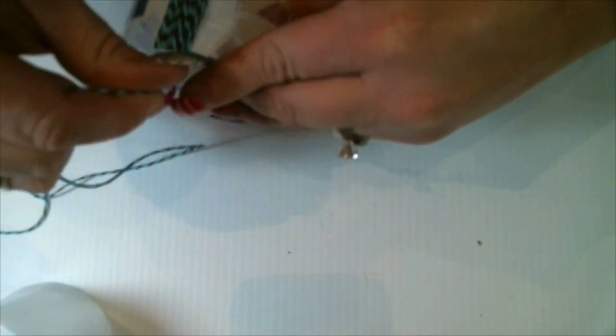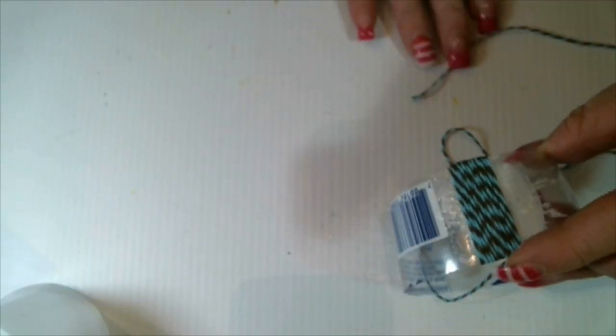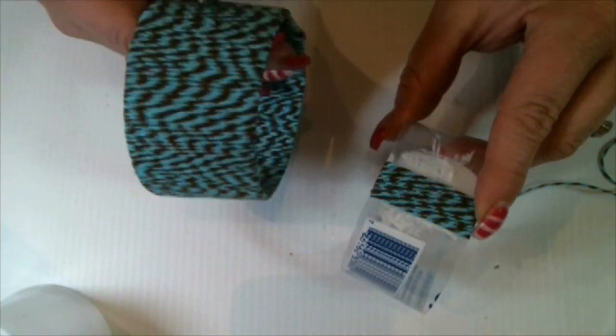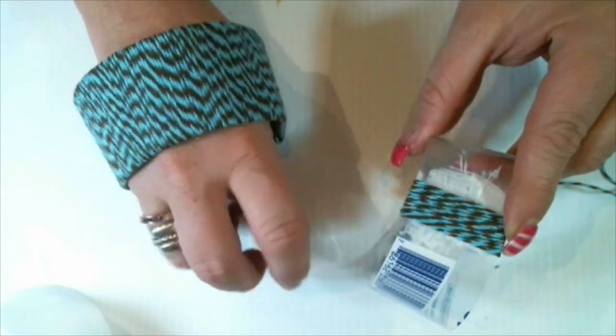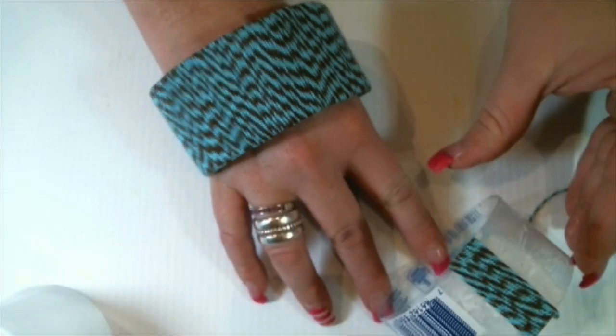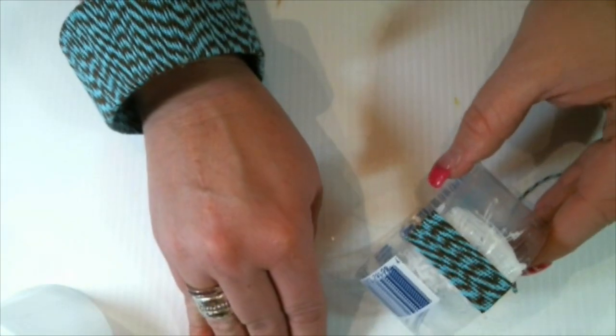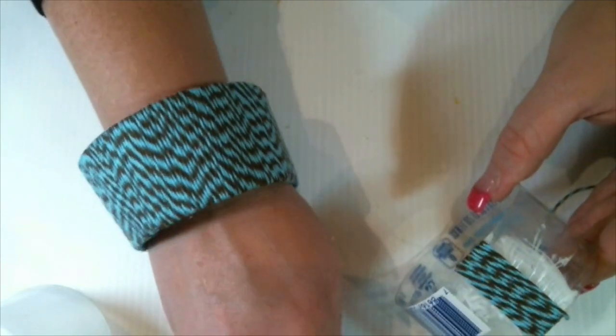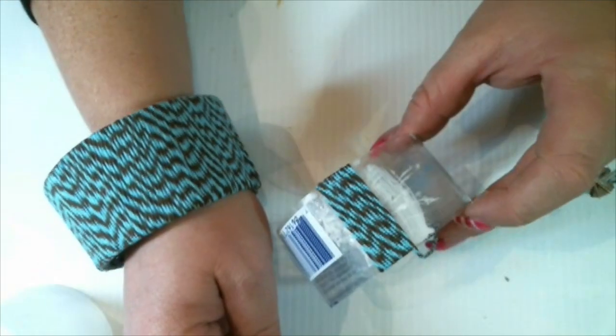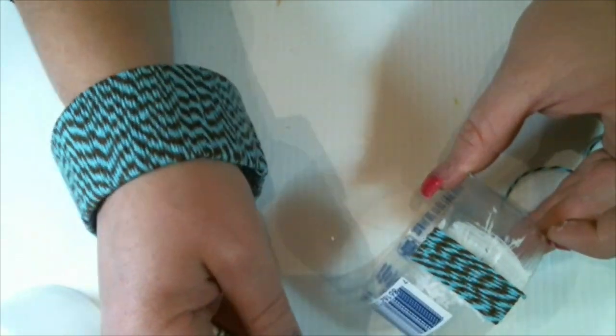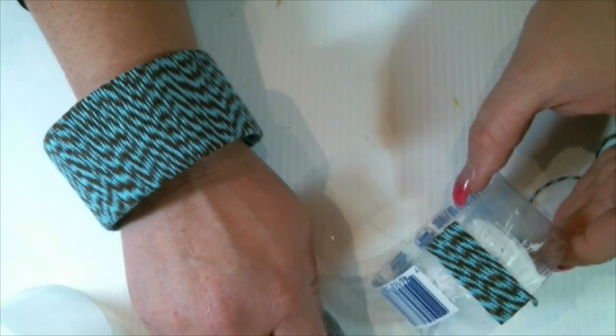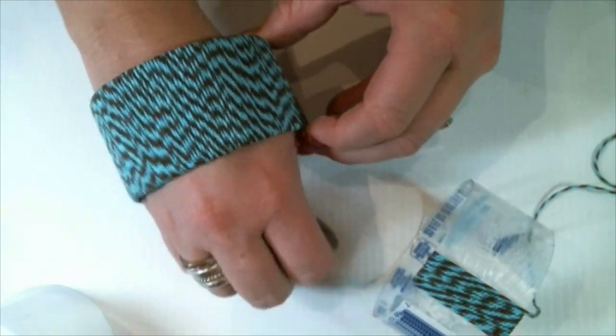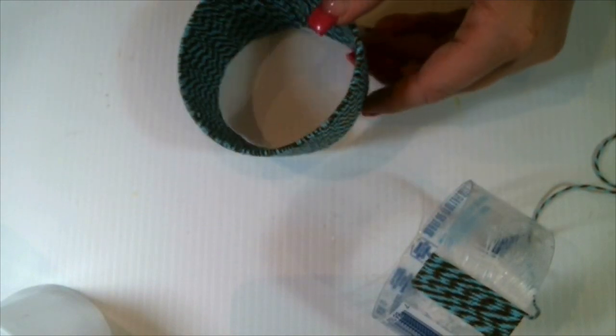When you reach the end, your bangle bracelet will go from this to this fabulous bracelet. Now this bracelet here that I have on my wrist right now is a little bit larger than this water bottle. It's a little wider and it kind of has a cone end at the top. What I used to achieve this bangle bracelet is I used a cup.